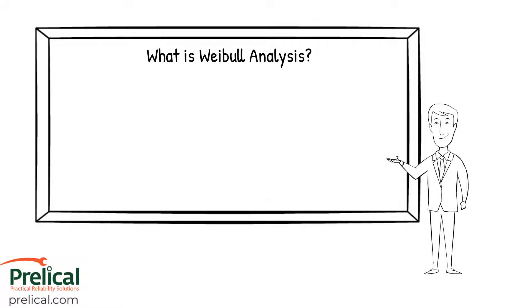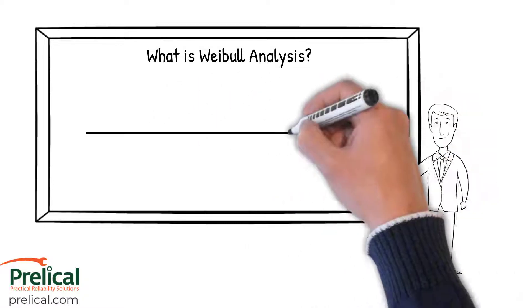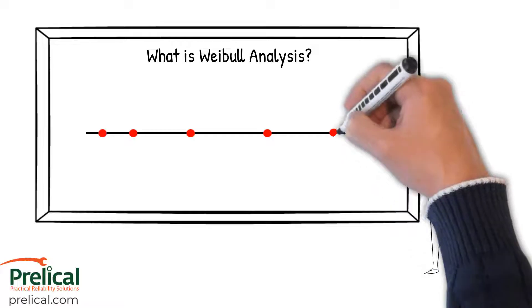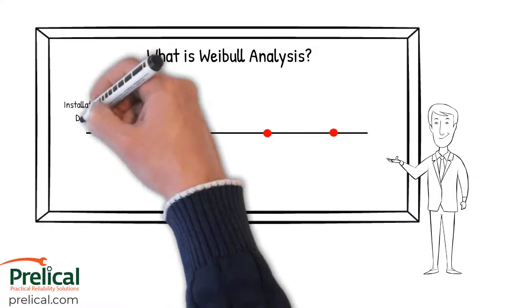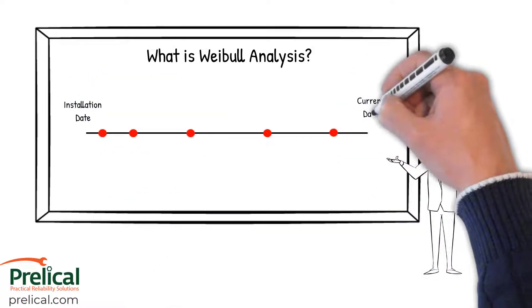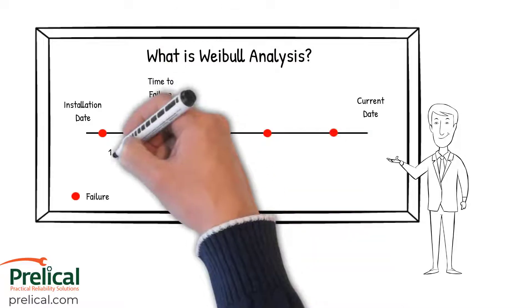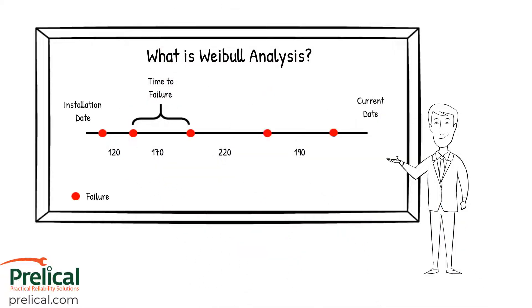If you need more information, check us out at Prolacool.com. So the first thing we need to do when we want to do a Weibull analysis is we need to determine what our TTF, or time to failures, are. We start with the installation date all the way through the current date, and in between we have failures. The time or the interval in between those failures is what we call the time to failure.